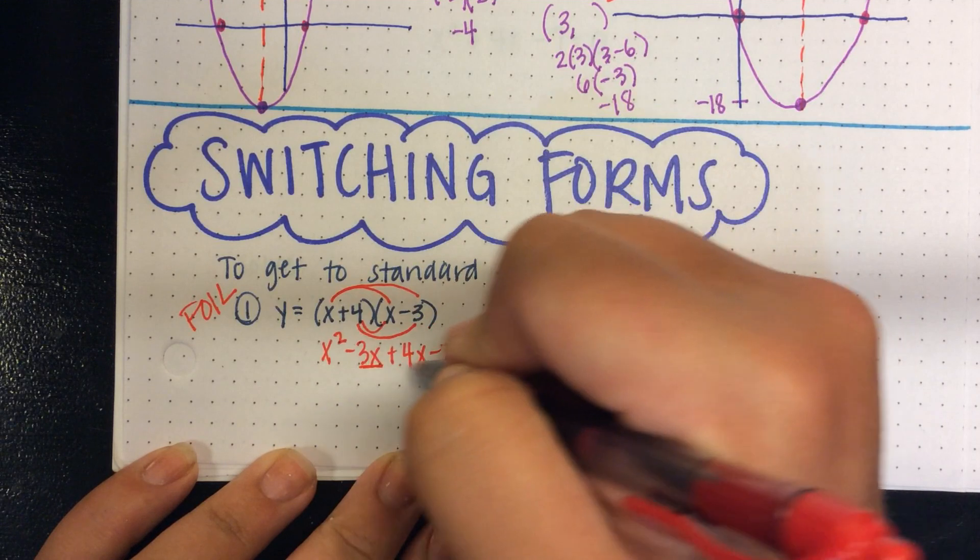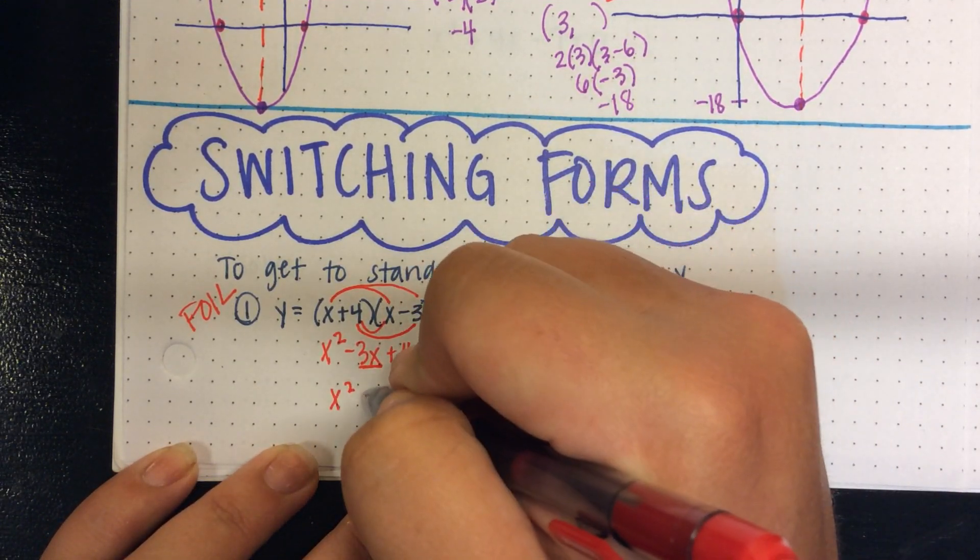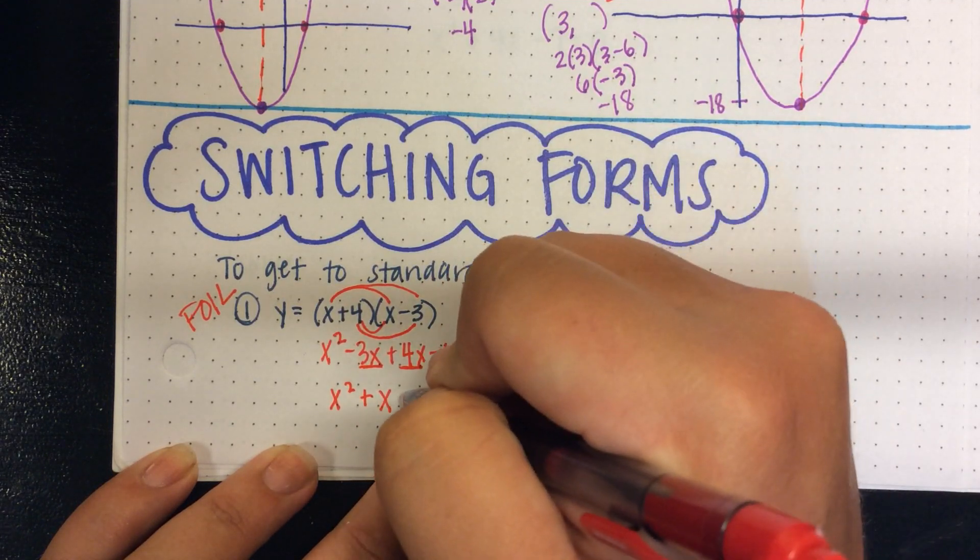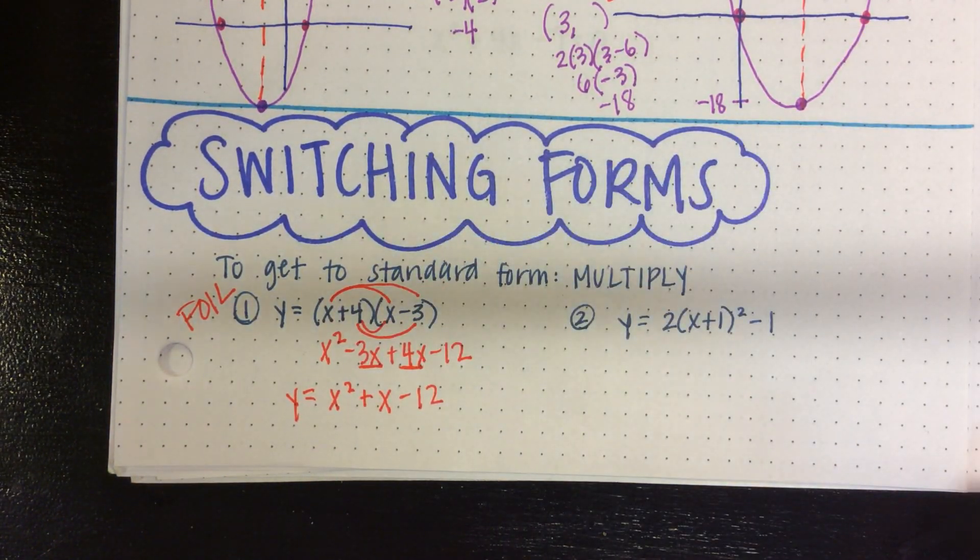Right, we got like terms. So I have x squared and then negative 3 plus 4 is a positive 1. And then minus 12. So there's my standard form. Just multiply it out.